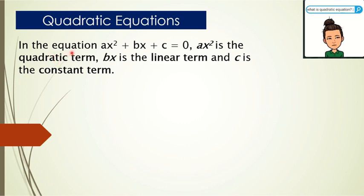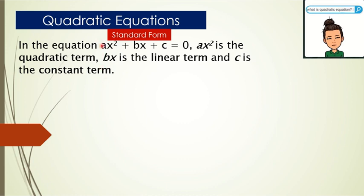In the quadratic equation ax squared plus bx plus c equals 0, ax squared is the quadratic term, bx is the linear term, and c is the constant term. The equation ax squared plus bx plus c equals 0 is the standard form of a quadratic equation. In standard form, you write the quadratic term first, followed by the linear term, then the constant term, and the expression equals 0. Did you get it?